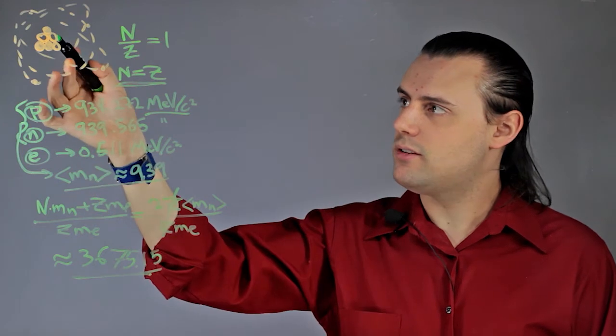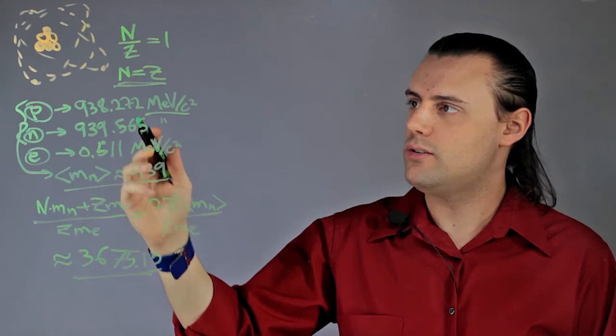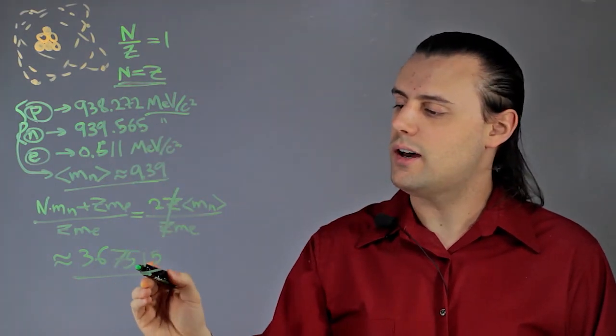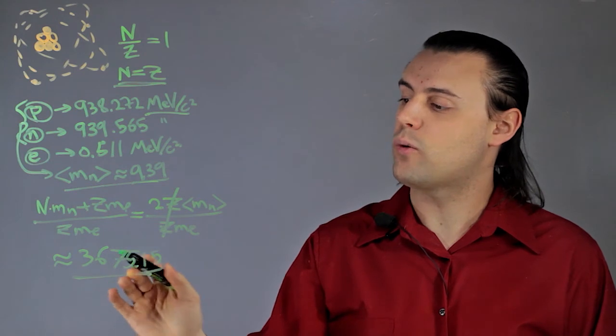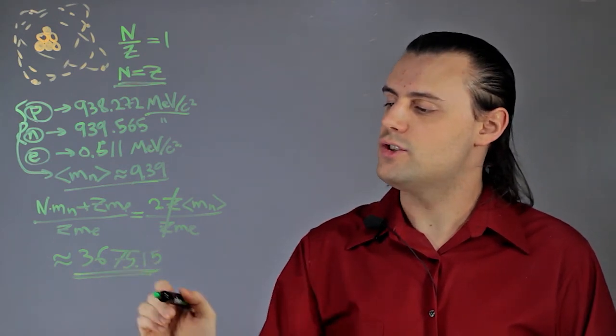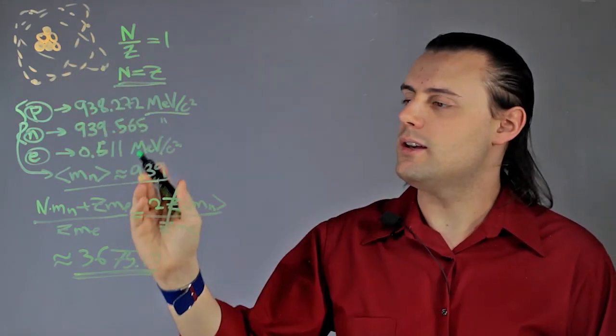we see that the mass of the nucleus compared to the mass of all the electrons in a light neutral atom is several thousand times greater than the mass of an electron. It's a very large ratio, so almost all of the mass of an atom is concentrated in the nucleus.